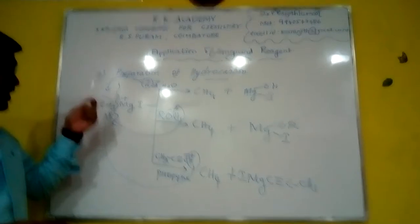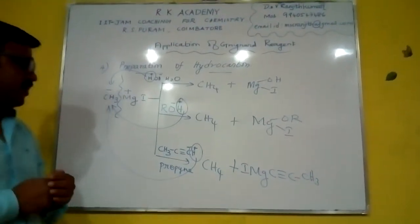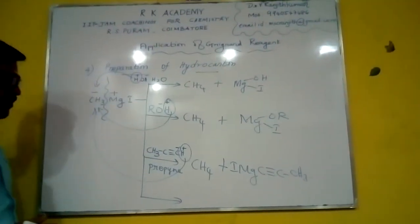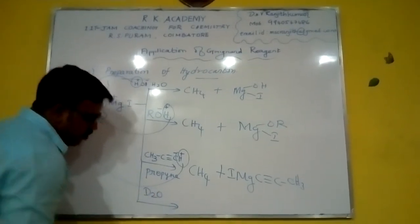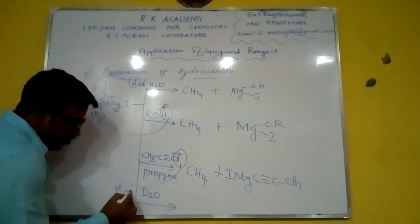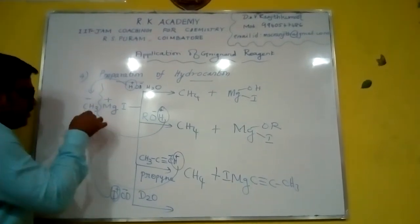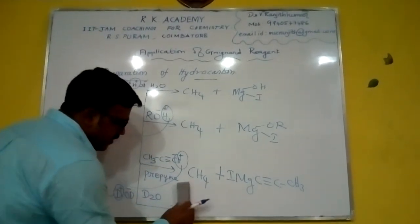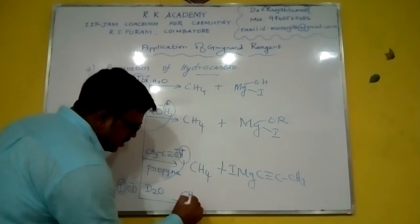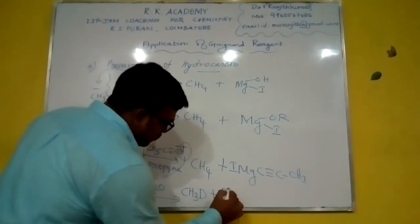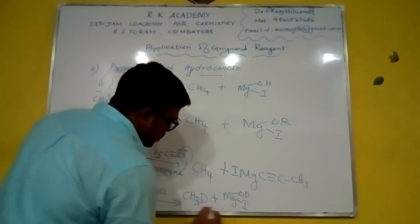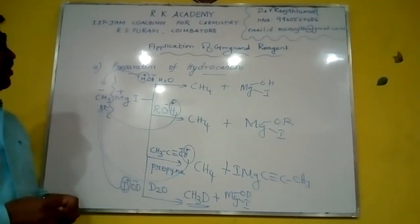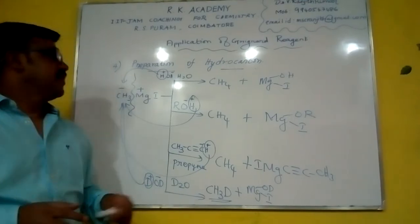Last one, suppose in examination they are giving deuterium, what do we do? Here D2O and CH3MgI, the answer is CH3D plus MgODI. So for deuteration we take D2O, CH3D is the answer. I hope you all understand well.